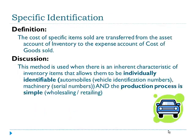Specific identification will get at least a mention here even though it's rarely used. The cost of specific items sold are transferred from the asset account of inventory to the expense account of cost of goods sold. This method is used when there's an inherent characteristic of inventory items that allows them to be individually identifiable — think about automobiles with vehicle identification numbers or machinery with serial numbers, where the production process is simple like wholesaling or retailing.